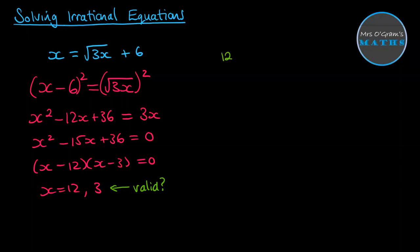All right, so let's check 12. Does 12 equal the square root of 3 times 12 plus 6? Okay, so 3 times 12 is 36. That's equal to 6 plus 6. So yes, that is equivalent.